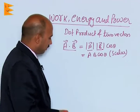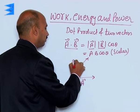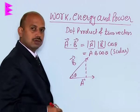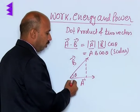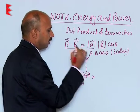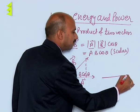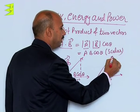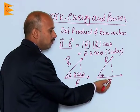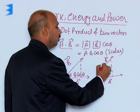Now we can see the geometrical interpretation. Suppose you have vector A and vector B to this side. The angle between them is theta. We draw a perpendicular and take the projection of B onto vector A, which will be B cosθ. So the projection of vector B on vector A is B cosθ. Similarly, we can take vector A and vector B, draw a perpendicular, and the projection of vector A along vector B is A cosθ.